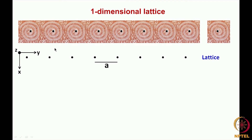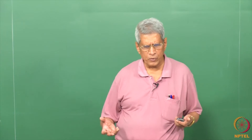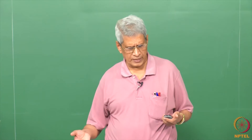When the pattern gets repeated, what is the shortest vector which is getting repeated? That is from one lattice point to another lattice point — this is the distance over which it gets repeated. If you represent it by a vector a, this is the lattice parameter. The pattern which is getting repeated is what we call the motif. The motif could be asymmetric or it could be a symmetric motif — the motif itself could have symmetry.